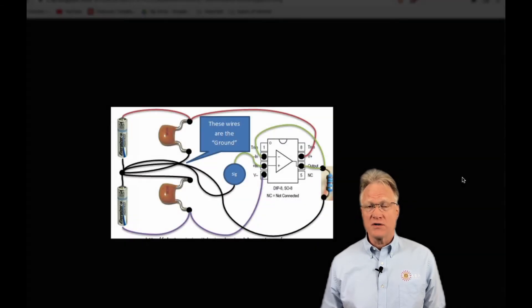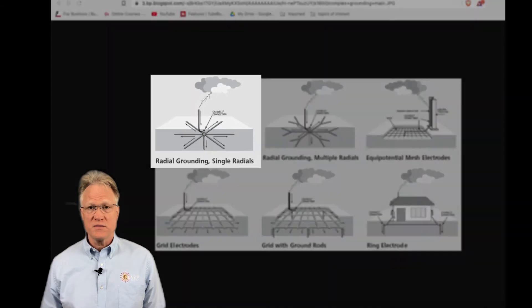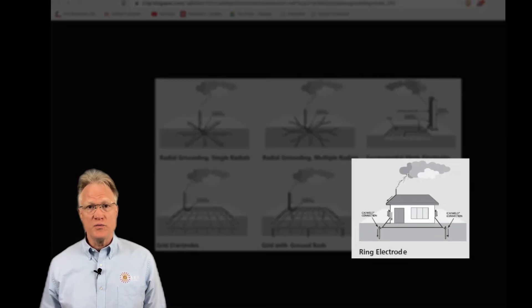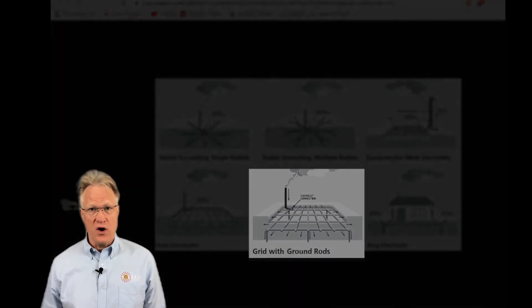Ground maps are schematics showing all ground paths and are used to control the current flow in single point ground systems, mesh ground planes, ring ground loops, and three-dimensional horizontal grid grounds with vertical ground rods.